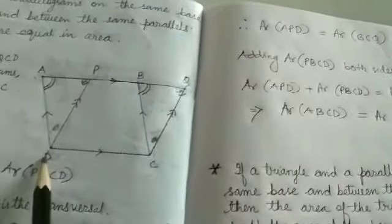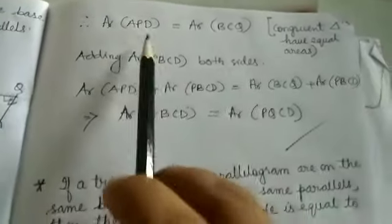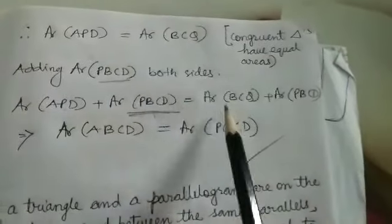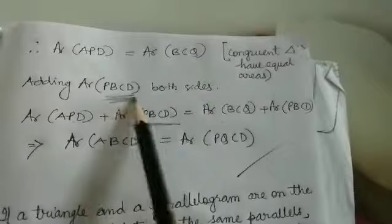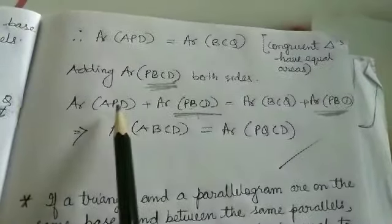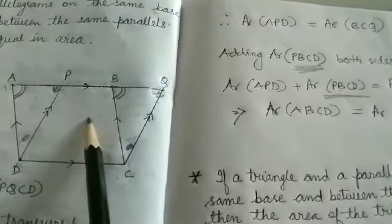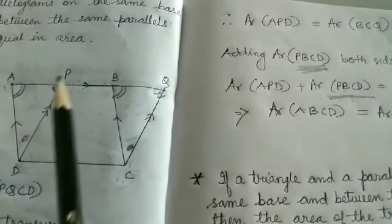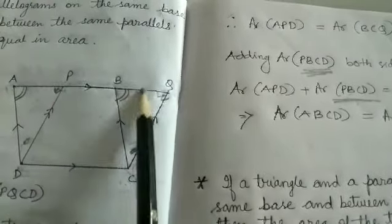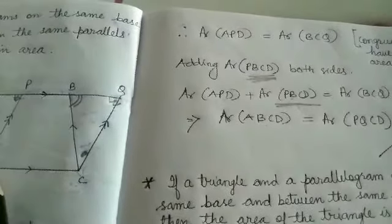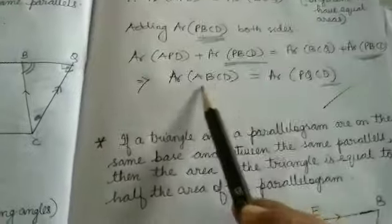Adding region PBCD to both sides: area of triangle APD plus area of PBCD gives parallelogram ABCD, and area of triangle BCQ plus area of PBCD gives parallelogram PQCD. Therefore both parallelograms are equal in area. Proof complete.